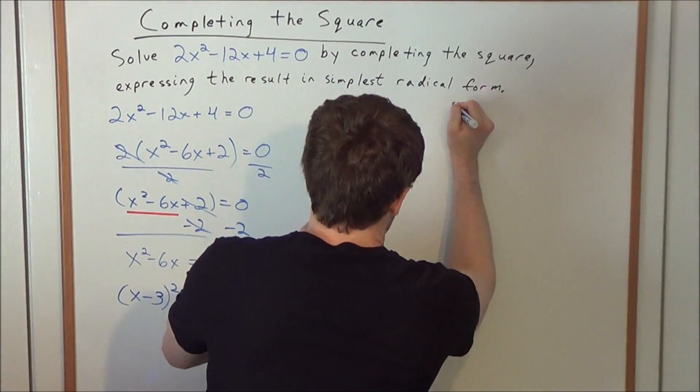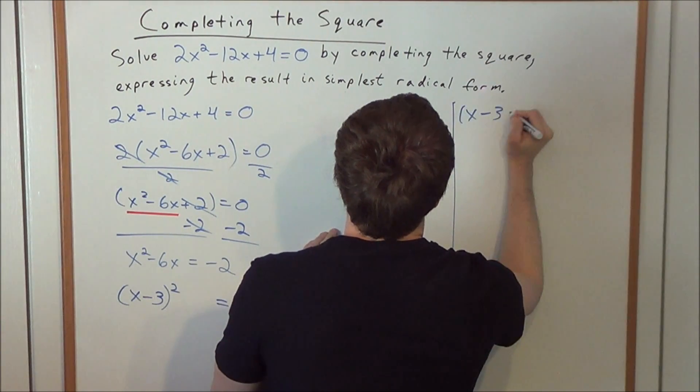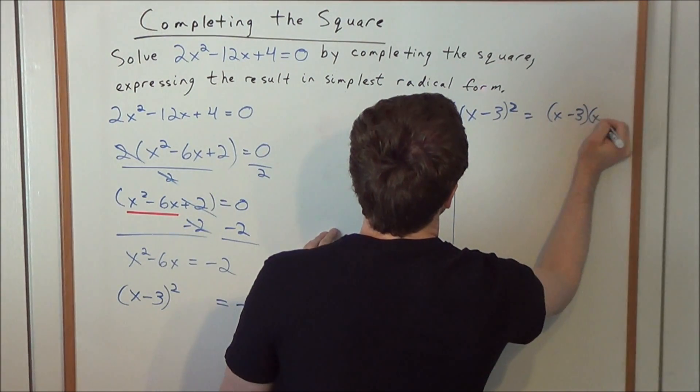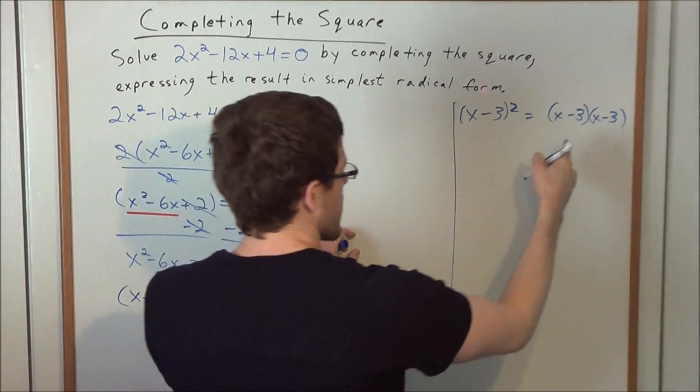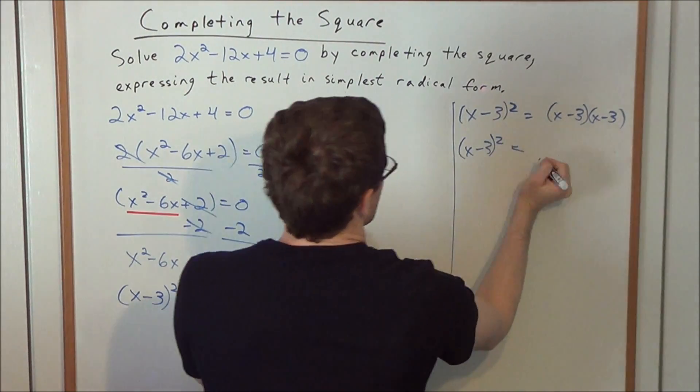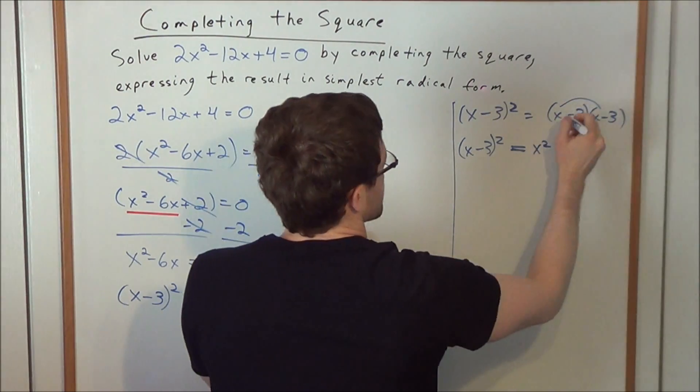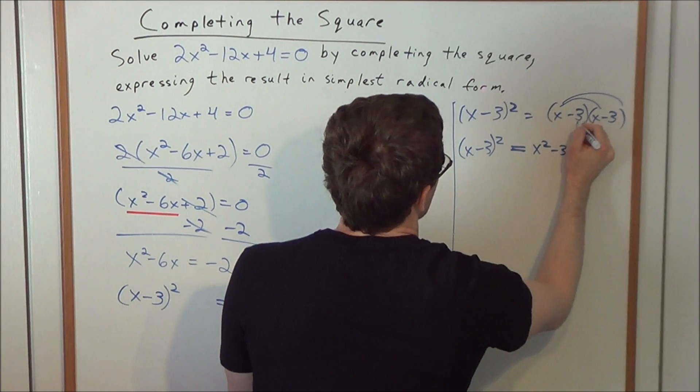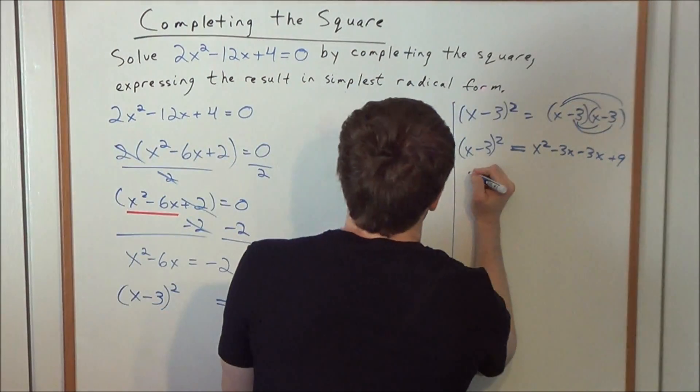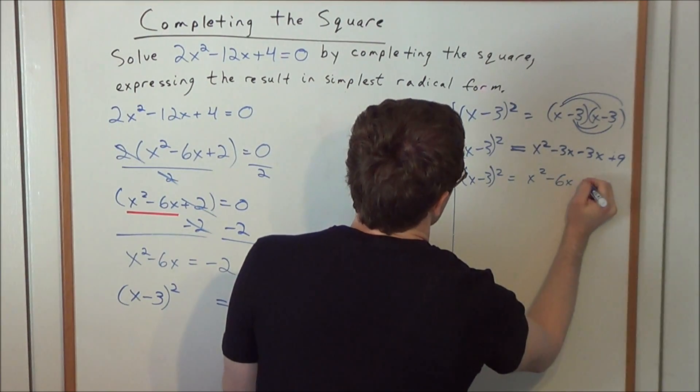So we look on the side at the problem (x - 3)², which is equal to (x - 3)(x - 3). Now to simplify (x - 3) times (x - 3), and let's keep in mind that this is still all equal to (x - 3)², when we simplify this right hand side, we're going to have x² - 3x - 3x + 9. So in simplified quadratic form, we have (x - 3)² = x² - 6x + 9.